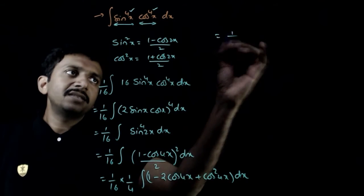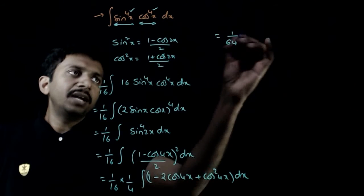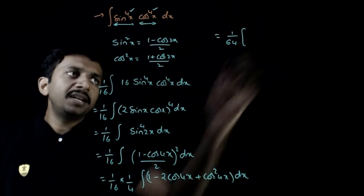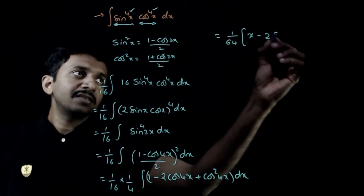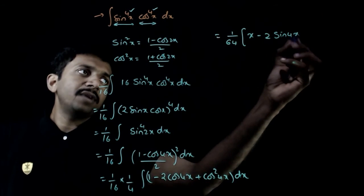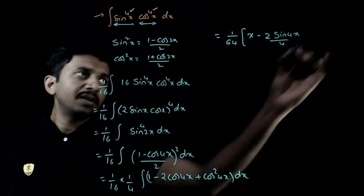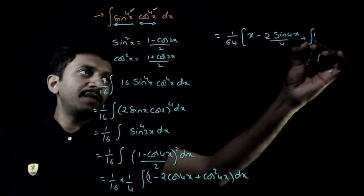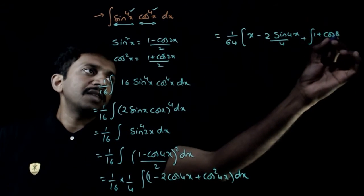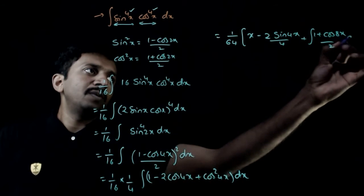That is equal to, we have 1 by 64 times integration of 1 dx is x minus 2 times, integration of cos 4x is sin 4x by 4 plus integration of cos square 4x which is 1 plus cos 8x by 2 dx.